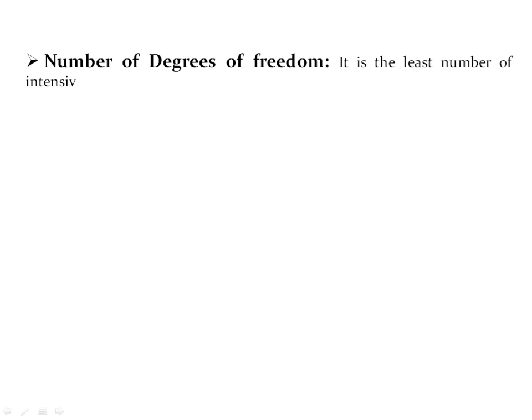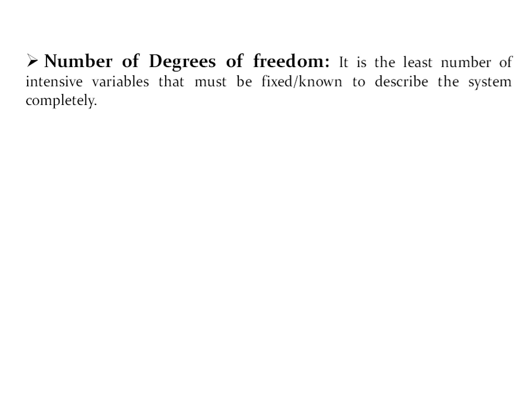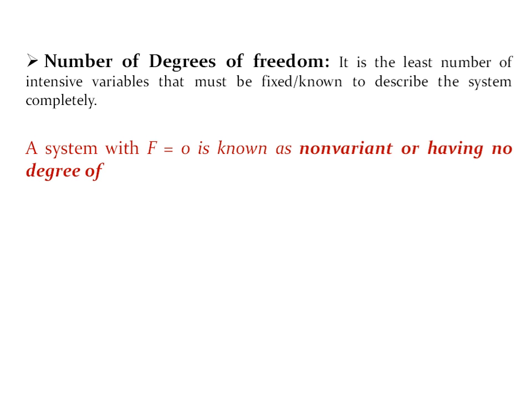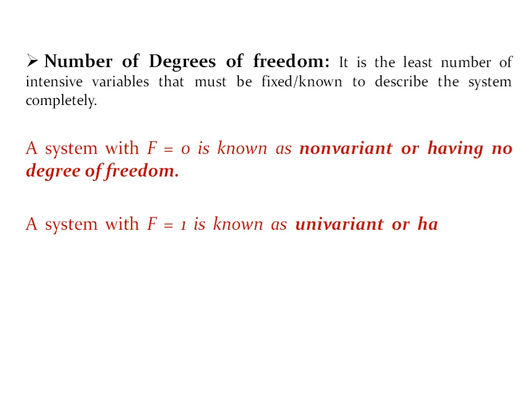Number of degrees of freedom: it is the least number of intensive variables that must be fixed or known to describe the system completely. A system with F equal to zero is known as non-variant — no variable is required to define your system completely. If F equals one, then the system is known as univariant; you require at least one variable to define your system completely.